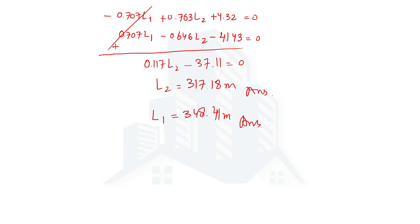This is how the calculation is done when the lengths of two lines are missing in any closed traverse. I hope you've understood the concept. If you feel any difficulty, let me know through the comment section and I'll get back to you. This is all from this video — thank you for watching, and I hope to see you in the next video.